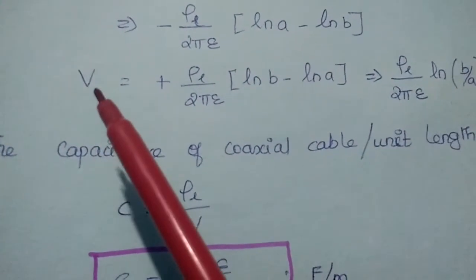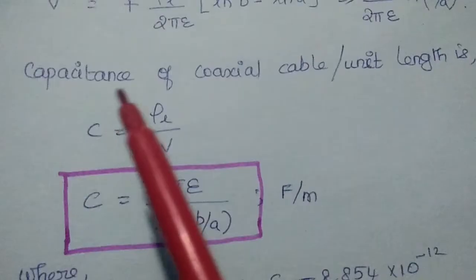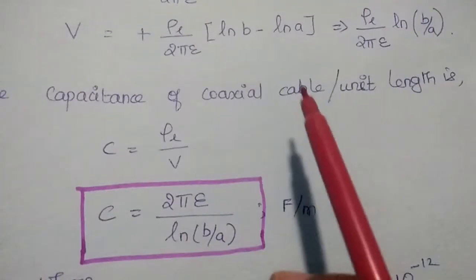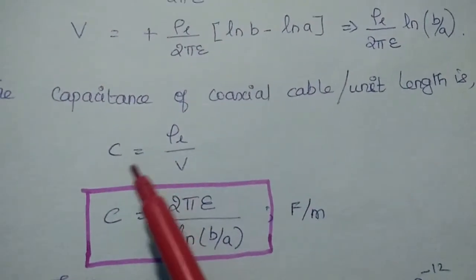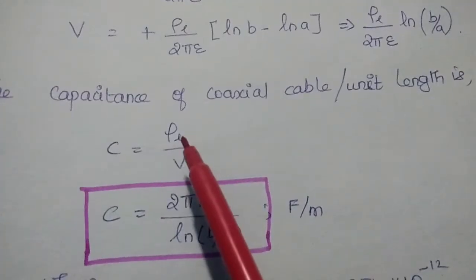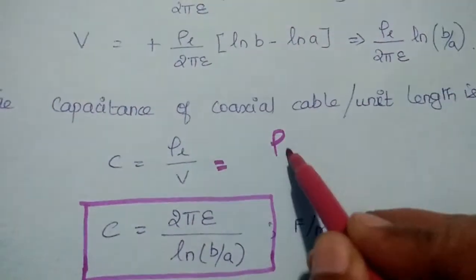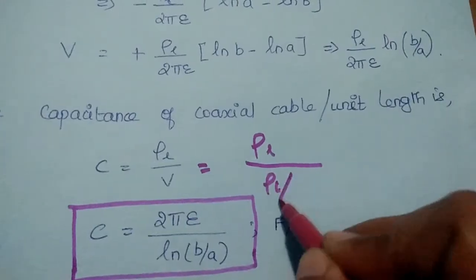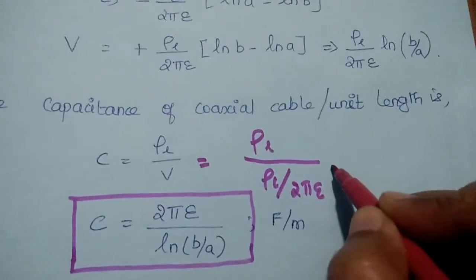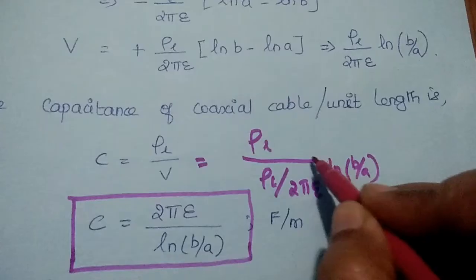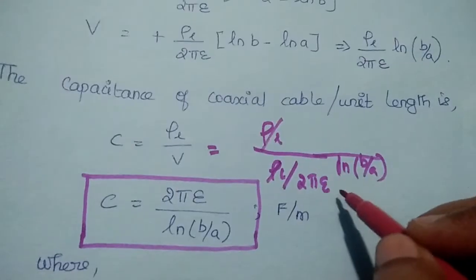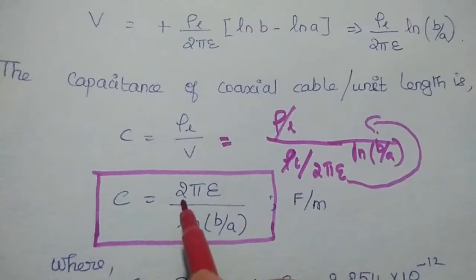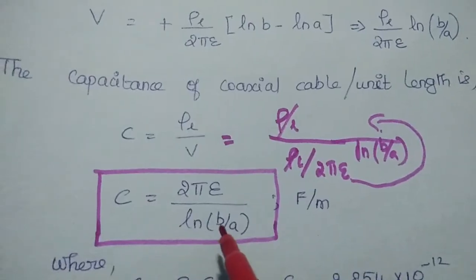Now we are going to find out the capacitance of the coaxial cable per unit length, since it is a cable. We have already discussed that capacitance equals Rho L by V. Here there is Rho L in the numerator, and the voltage value is Rho L divided by 2 pi epsilon into ln(B by A). So Rho L and Rho L cancel each other, and 2 pi epsilon goes to the numerator. We get capacitance equal to 2 pi epsilon divided by ln(B by A).